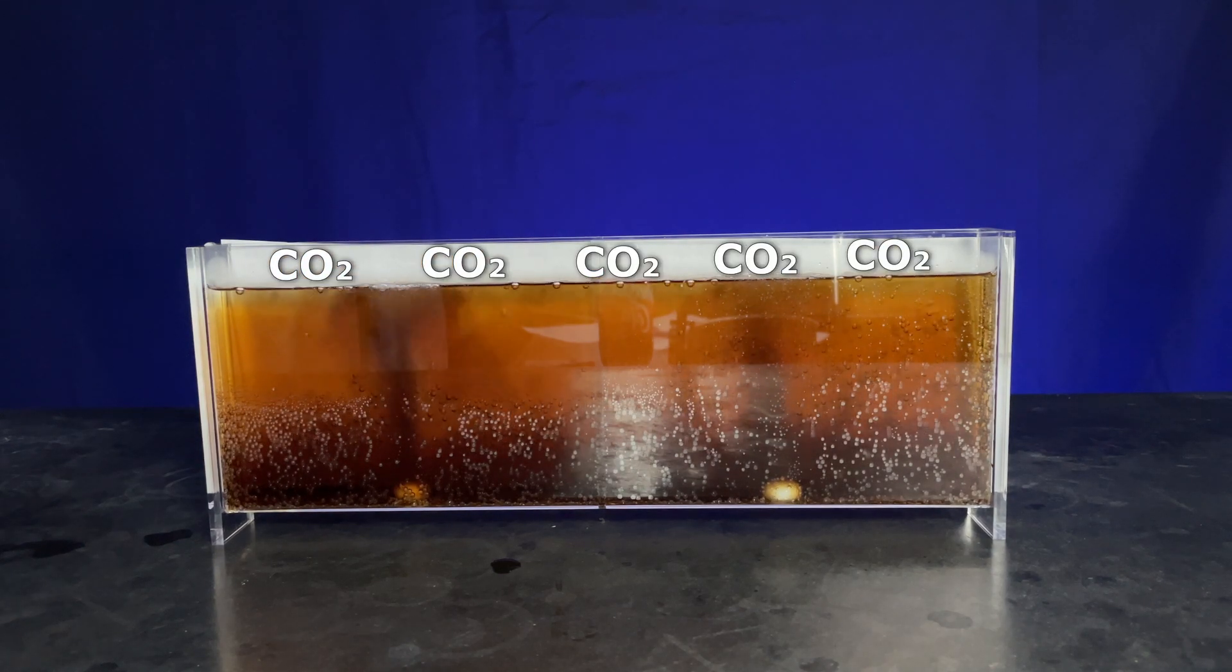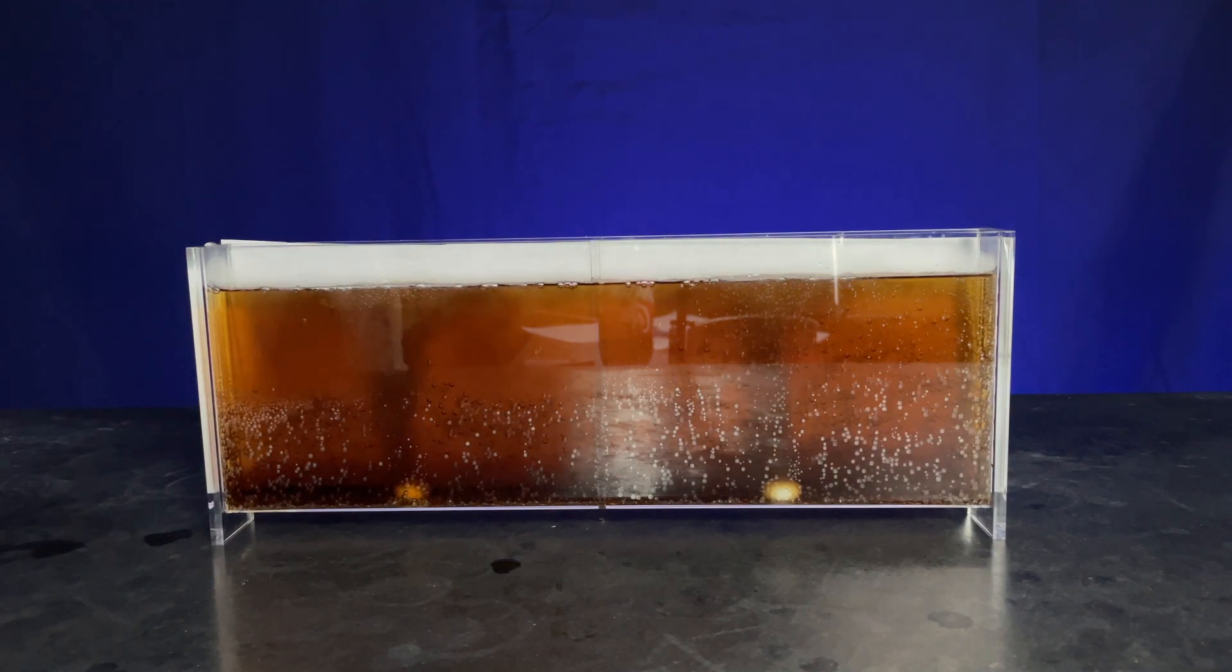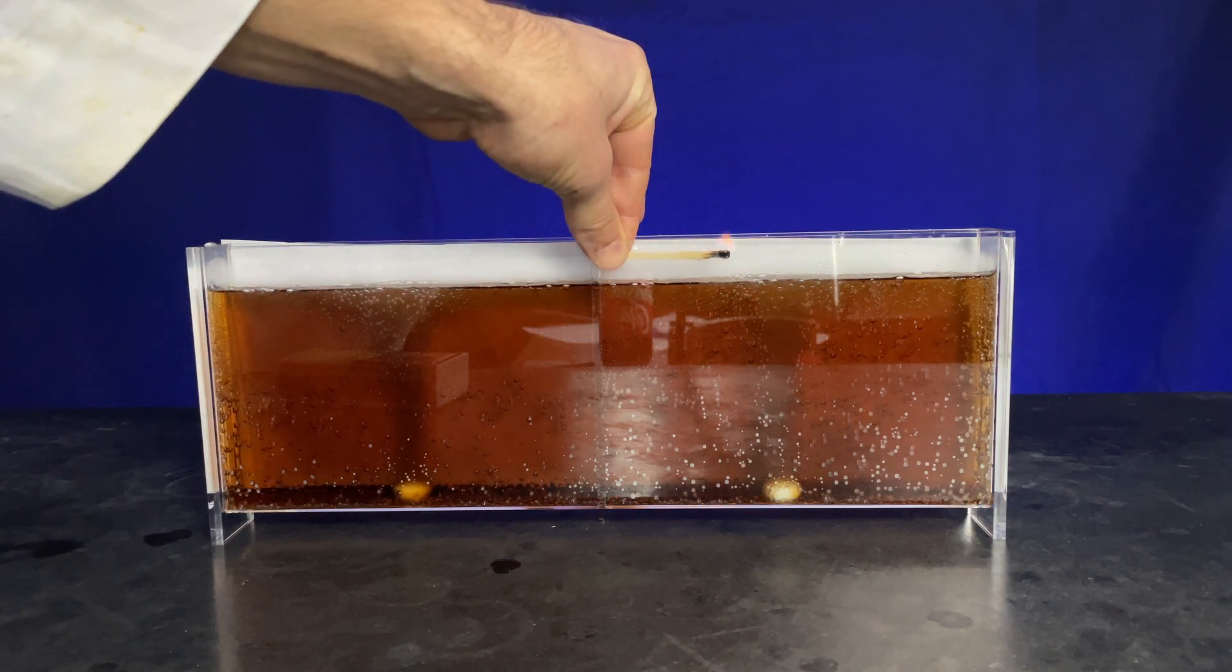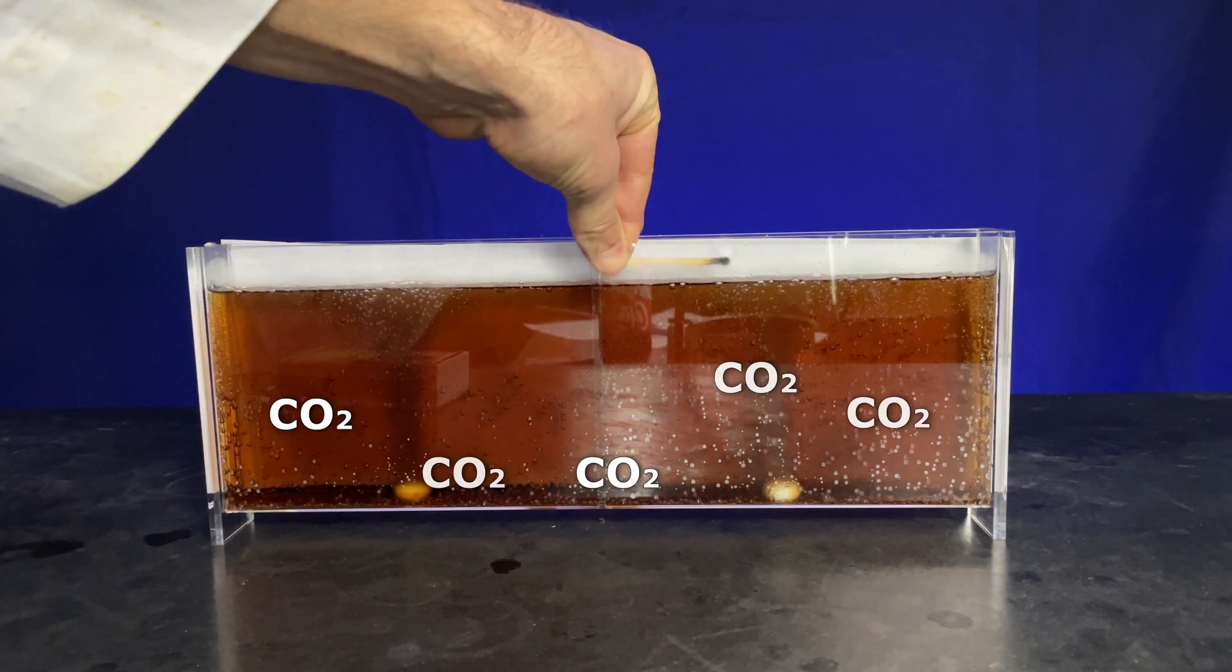And we can even show it's dangerous in this experiment. If we bring a match in and bring it above the lake, we can see that the match goes out. The CO2 settled above the top of the lake and displaced that oxygen. So part three, can this be prevented?